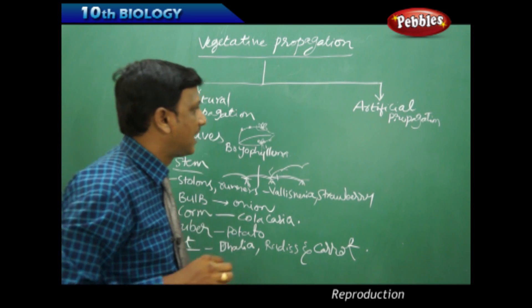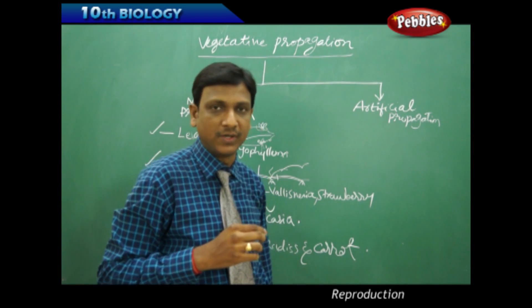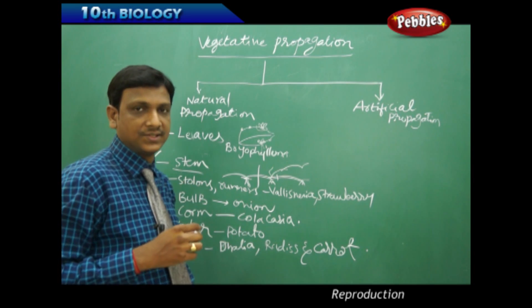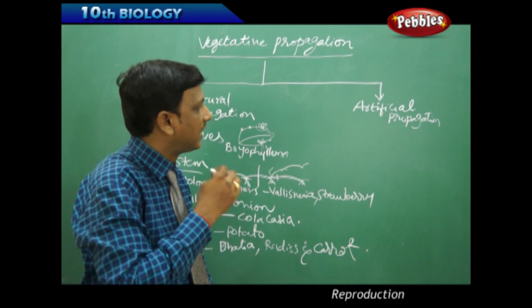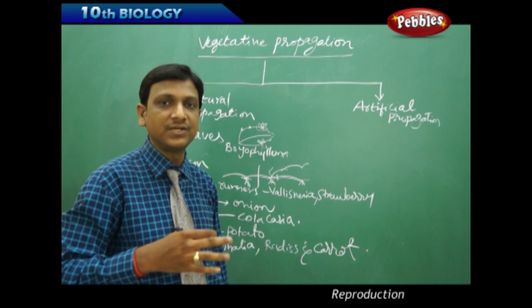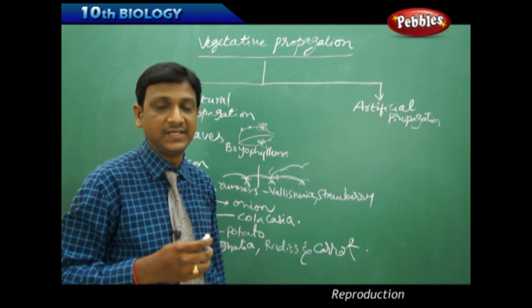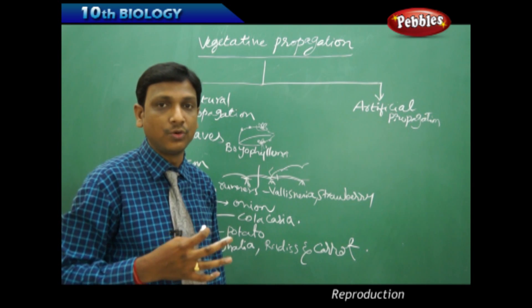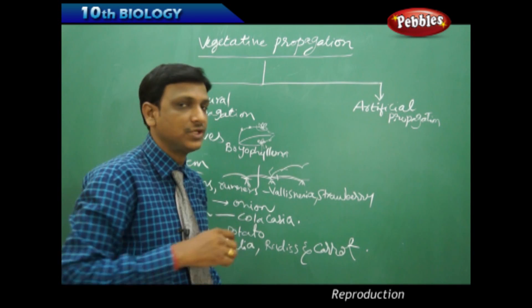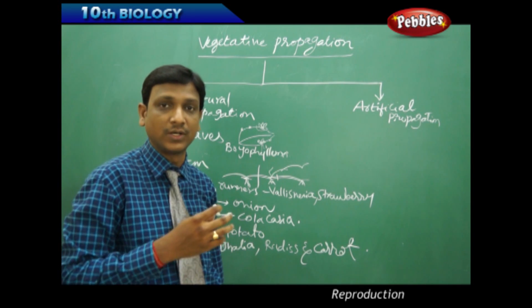Now let us see the other artificial methods of propagation, vegetative propagation. There are different methods developed in artificial propagation for commercial users. We get many benefits for novelty, for difference. We can grow plants with different features using these artificial propagation techniques. Now let us see what are those techniques.